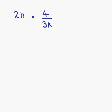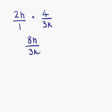Example 4: we have 2h multiplied by 4 over 3k. This time we only have one fraction. We want to make 2h into a fraction as well, and the easy way to do that is by putting it over 1. So 2h over 1 multiplied by 4 over 3k: multiplying the numerators, 2h times 4 gives us 8h, and 1 times 3k gives us 3k on the denominator. Can we simplify? No, so 8h over 3k is our final answer.